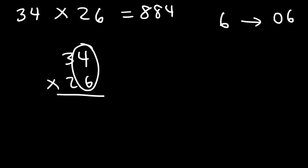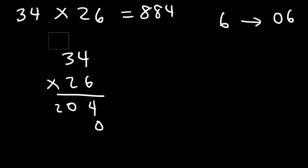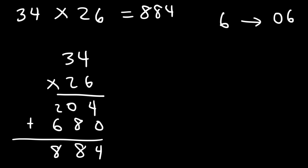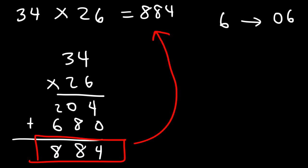Let's confirm using old-school multiplication. Multiply 4 times 6, which is 24 — carry the 2. Then 3 times 6 is 18 plus 2, so 20. Add a zero for the next row. Now 2 times 4 is 8 and 2 times 3 is 6. Adding everything: 4, 8, then 2 plus 6 is 8, giving the same answer of 884. Lattice multiplication works.